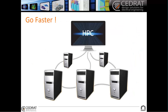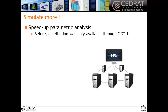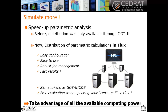The third new feature is to go faster, and how to do this, as you can see on this picture, is thanks to the distribution. You might know that before, distribution of computation was available through GOTIT, which means you could run all the computation for the optimization with the distribution. Now, thanks to Flux 12.1, you will be able to distribute all the parametric calculations directly in Flux.